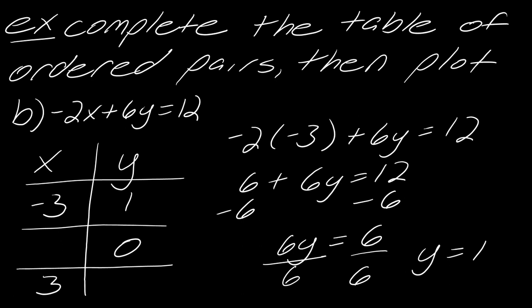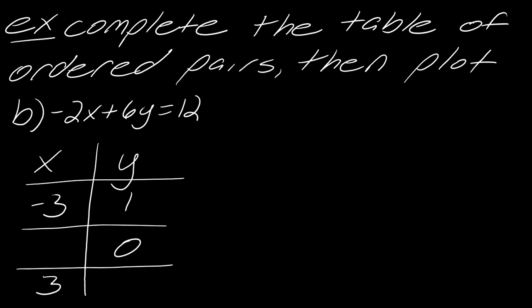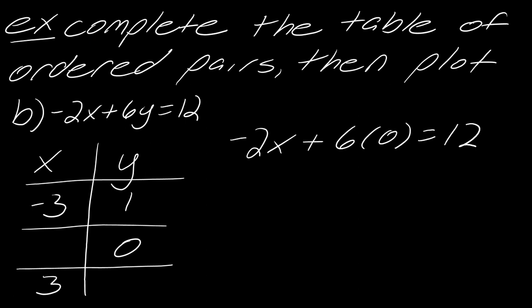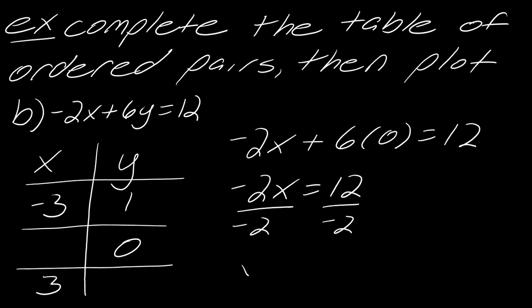Now let's move to the next entry where y = 0. I'll leave x alone and plug in 0 for y, giving −2x = 12. Dividing both sides by −2 gives x = −6, and that goes into my next table entry.